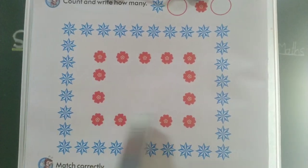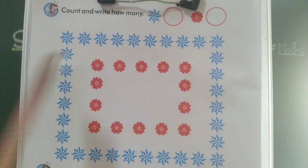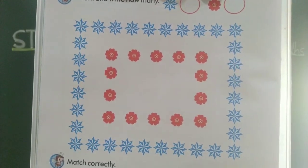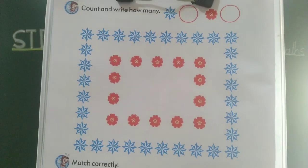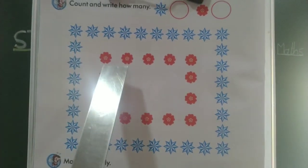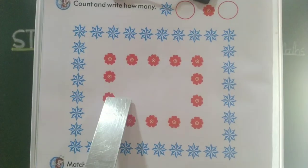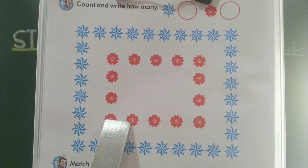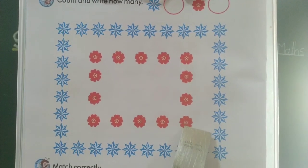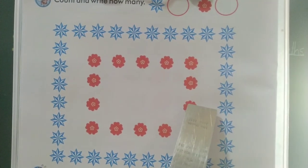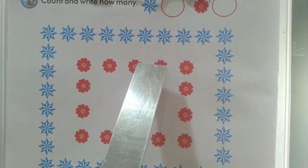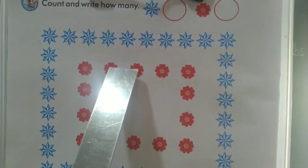Ate ar red flowers count kare chahi. Okay: 1, 2, 3, 4, 5, 6, 7, 8, 9, 10, 11, 12, 13, 14.